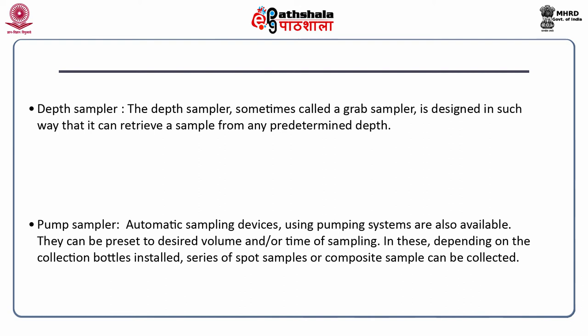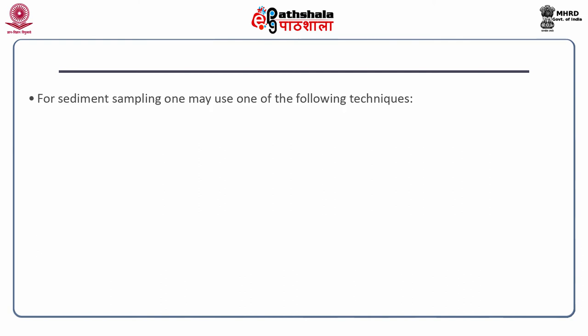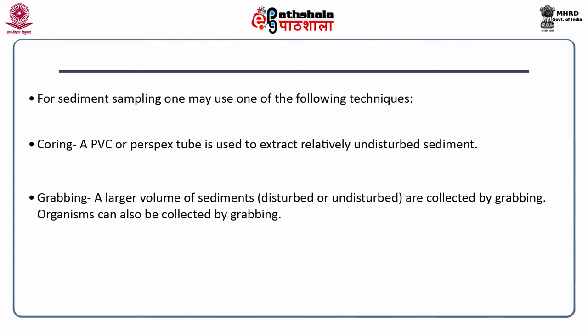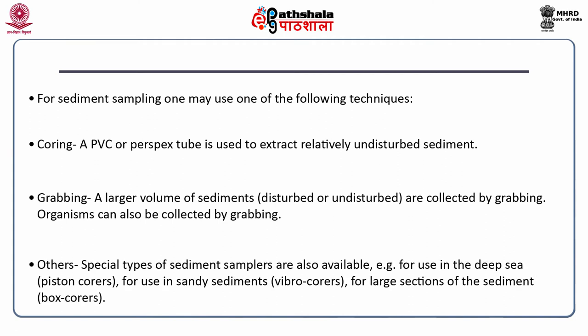For sediment sampling, one may use: coring — a PVC or perspex tube is used to extract relatively undisturbed sediments; grabbing — a large volume of sediments, disturbed or undisturbed, are collected, and organisms can also be collected by grabbing. Special sediment samplers are also available — for example, piston corers for use in the deep sea, vibro corers for use in sandy sediments, and box corers for large sections of sediments.